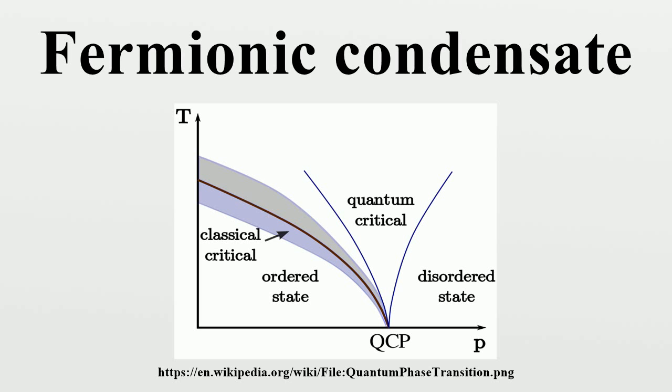A chiral condensate is an example of a fermionic condensate that appears in theories of massless fermions with chiral symmetry breaking.